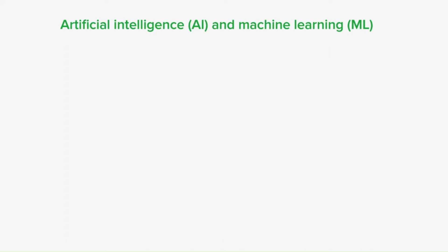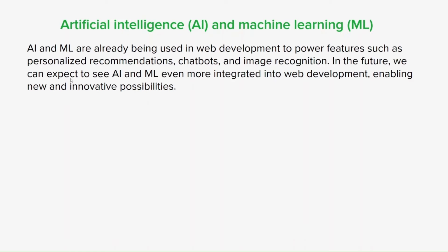One of the most interesting new technologies that's going to have a great impact on web development — and already has — is artificial intelligence and machine learning. AI and ML are already being used in web development for features like personalized recommendations, chatbots, and image recognition. In the future, we can expect to see AI and ML even more integrated into web development, enabling new innovations and possibilities.